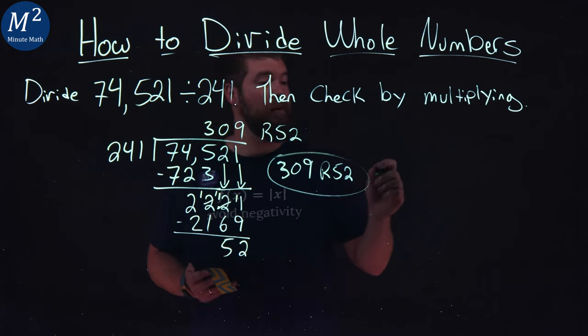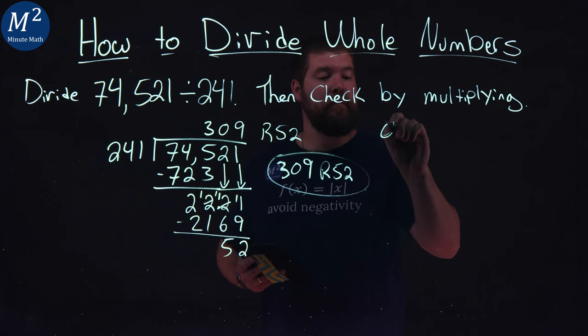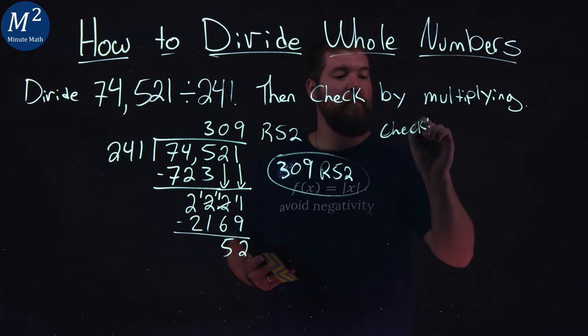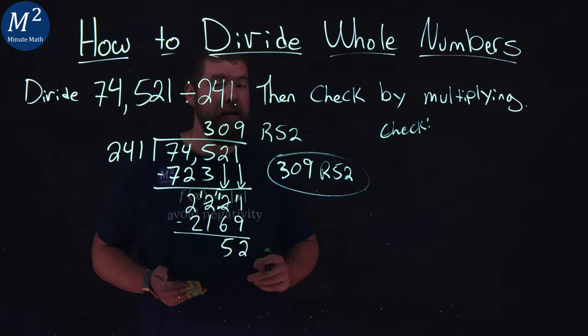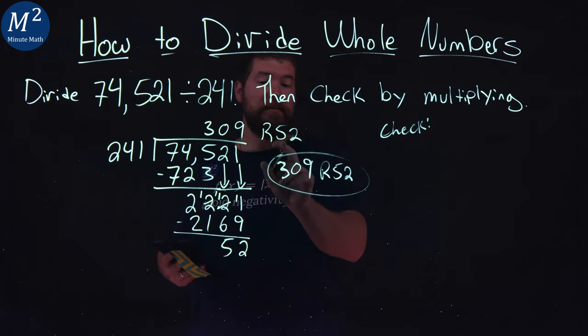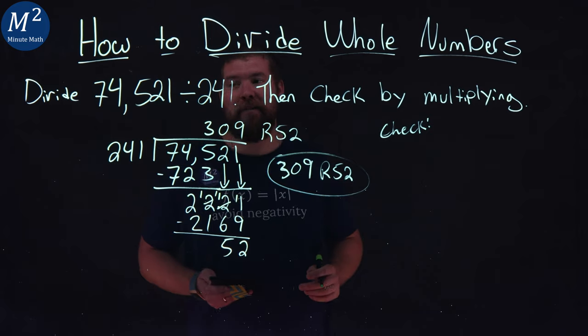Now, we need to check it and this marker is coming too. All right. Let's go check that out. What we're going to do is take 241 times 309, add what that result is to 52 and we should get 74,521.